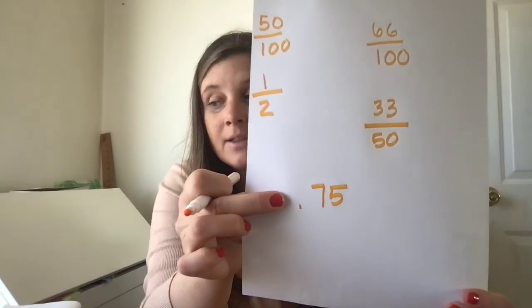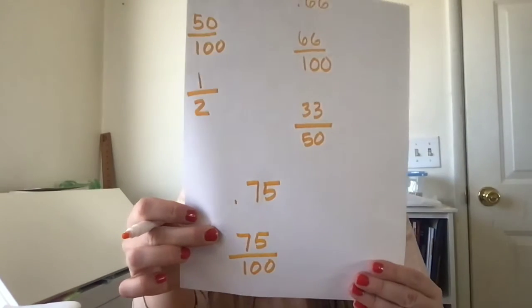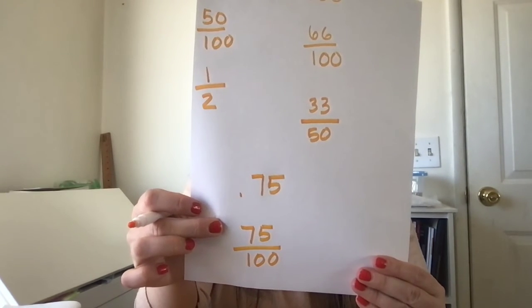Last one, here we go: 0.75. So that's your new index card. And now on your last index card, write it as a fraction: 75 over 100. Now you should have some piles: 1, 2, 3, 4, 5, 6, 7. You have seven piles of index cards.